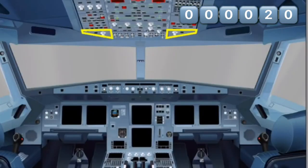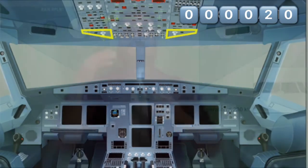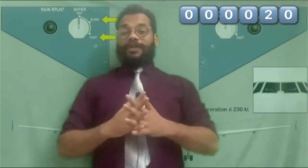Both wipers are independently operated from the control panel on the overhead panel in the cockpit. On the captain side, there's a control panel to control the captain side wiper. On the first officer side overhead panel, there is another wiper switch to control the first officer side wiper.